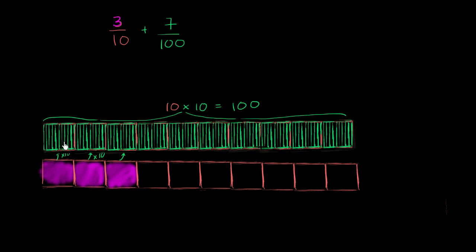And 3 tenths would be equivalent to how many of these hundredths? Well, each of these tenths will now become 10. So you're going to have 10, 20, and then 30 hundredths.